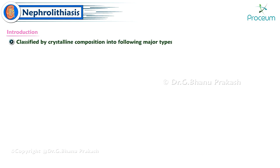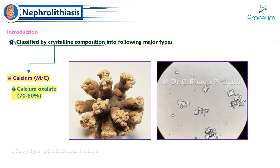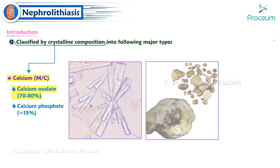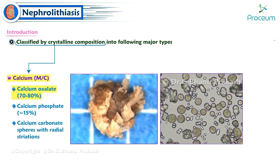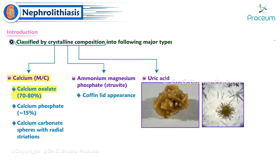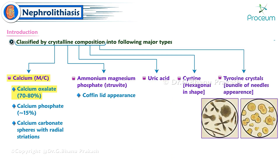Kidney stones are classified by their crystalline composition into major types: calcium — most common — including calcium oxalate (70–80%), calcium phosphate (15%), and calcium carbonate. There are also spheres with radial striations; ammonium magnesium phosphate (struvite) with coffin lid appearance; uric acid; and cysteine, hexagonal in shape. Tyrosine crystals have a bundle of needles appearance.